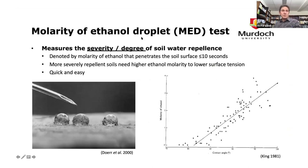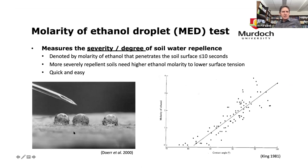The other approach is the MED — molarity of ethanol droplet test. You make up ethanol solutions of different concentrations and start with water. If it doesn't penetrate in less than 10 seconds, you try one molar ethanol, then two molar, and so on, until you find the molarity of ethanol which allows the droplet to soak in within 10 seconds. That value is your water repellency measurement. In most water repellent soils the value comes out between about 1.5 and 3.5 or 4.